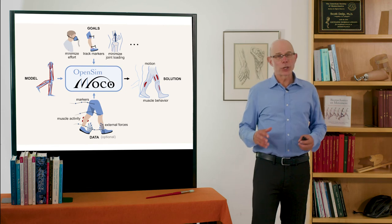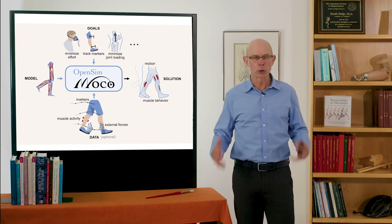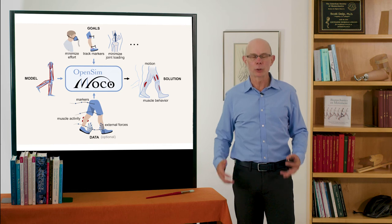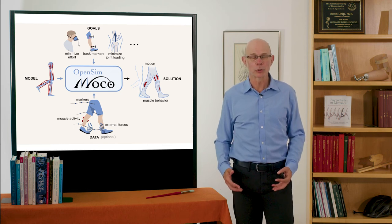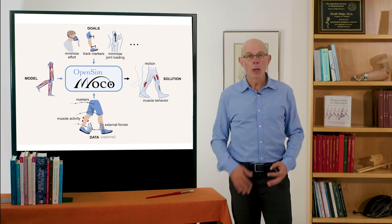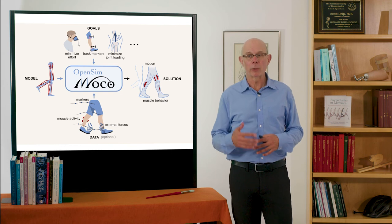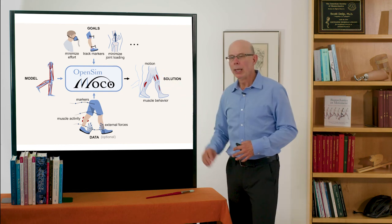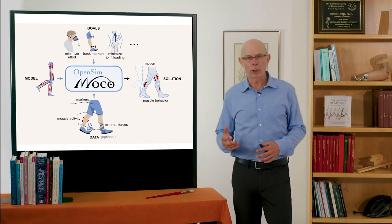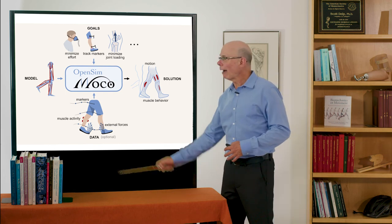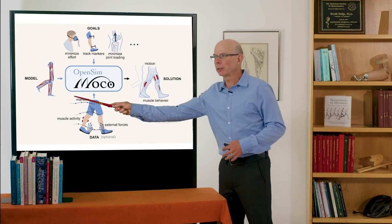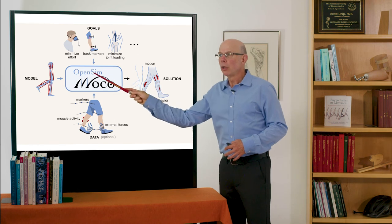One of the big challenges of making simulations is finding the controls—how to coordinate and control all those muscles to produce graceful movement. One of the things that we provided just very recently is OpenSim Moco. It's an optimization technique called direct collocation, where you have a model of the musculoskeletal system and you set goals.